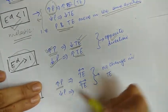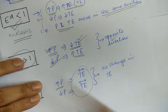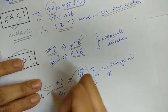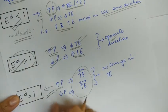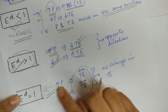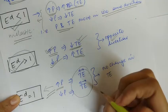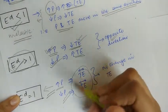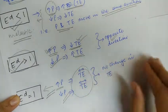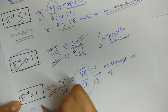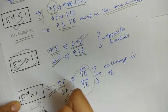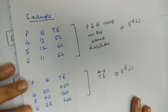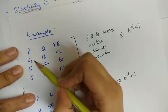When the price of the commodity increases or decreases but the total expenditure on that commodity does not change, we say that the elasticity of demand is equal to one — that is, unit elastic. Whether the price increases or decreases, if total expenditure remains unchanged, the elasticity of demand is unit elastic.